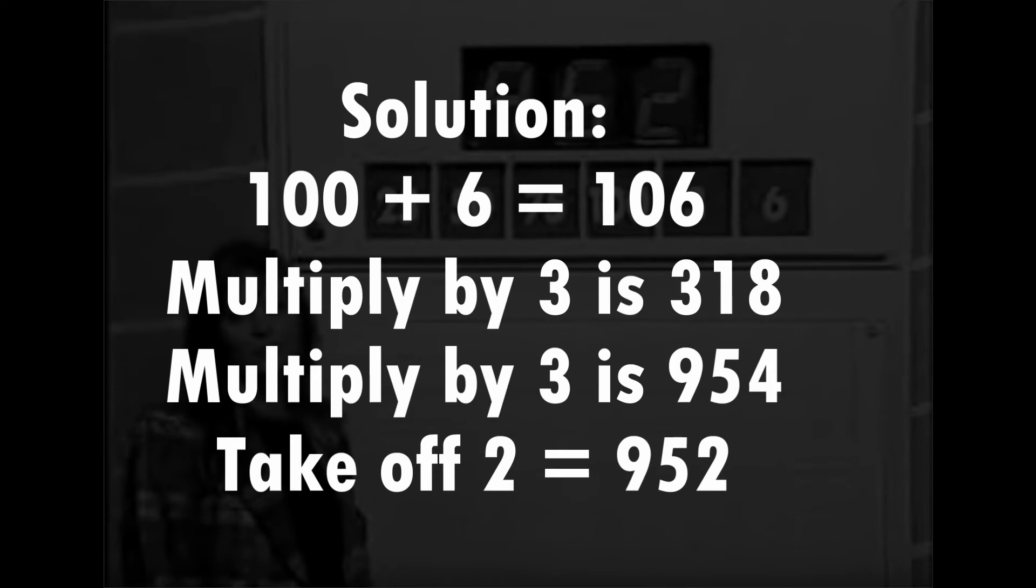So what the player does is they do a traditional sort of countdown solution, and they come up with this: 100 plus 6 is 106, multiply by 3, multiply by 3, take off 2.